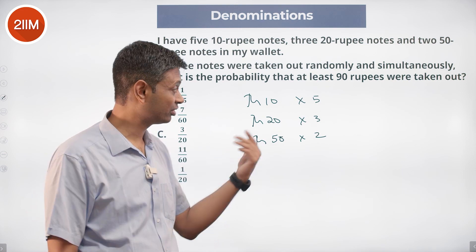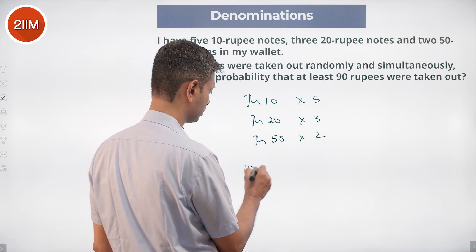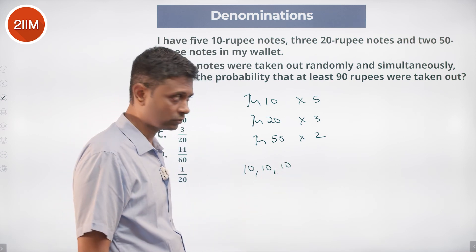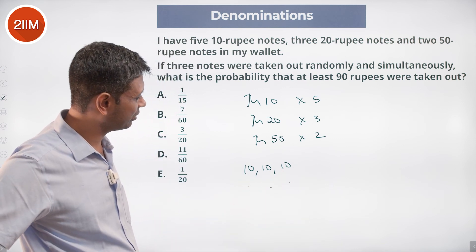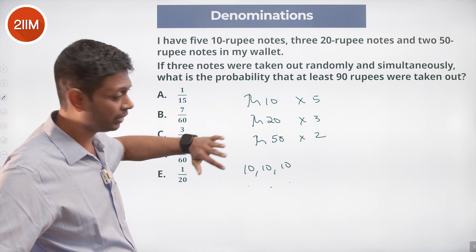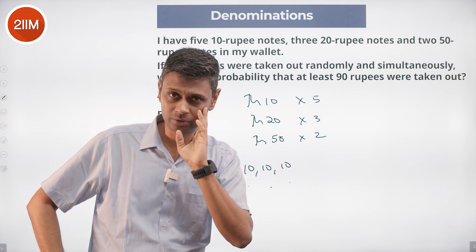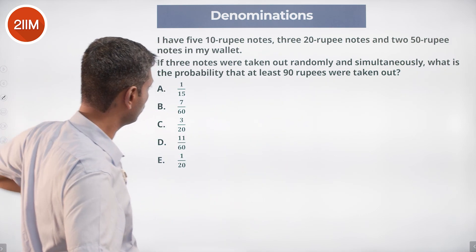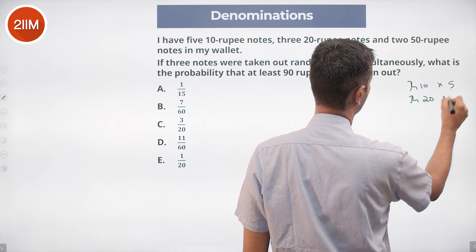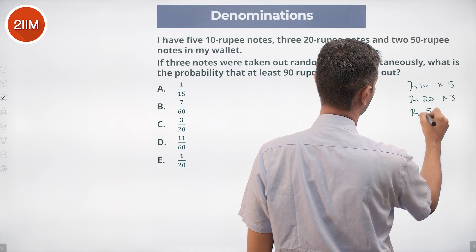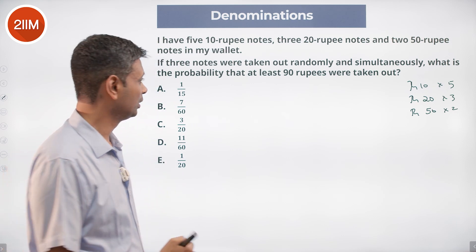To start, 3 notes are taken out. What could it be? I could have all 3 as 10-rupee notes, all 3 as 20-rupee notes, but I could not have all 3 as 50-rupee notes. I could have 2 tens and a 20, or a 10, a 20, and a 50. It's complicated, so I need a method. I have 10-rupee notes ×5, 20-rupee notes ×3, and 50-rupee notes ×2.